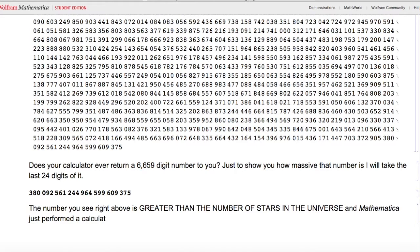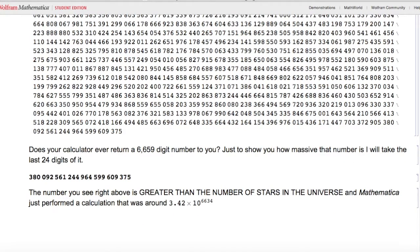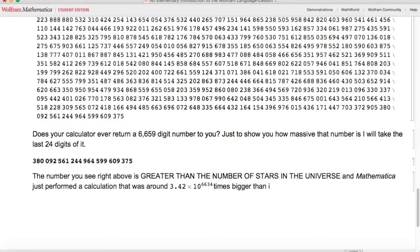The number you see right above is greater than the number of stars in the universe. And Mathematica just performed a calculation that was 3.42 times 10 to the 6634th times bigger than it. That is a 3.42 times one followed by six thousand six hundred thirty-four zeros. I doubt that there is even a name for such a large number.